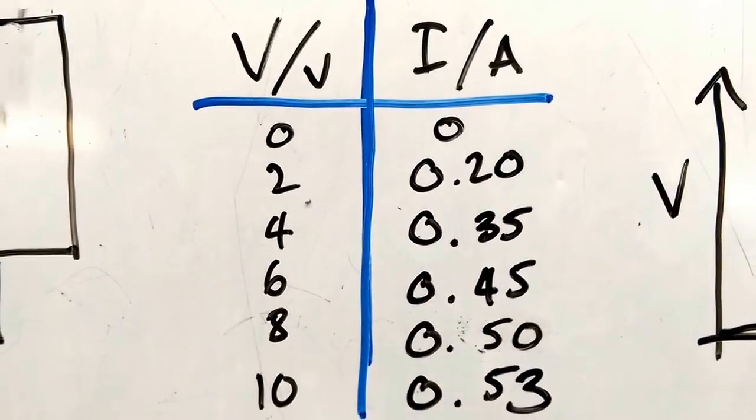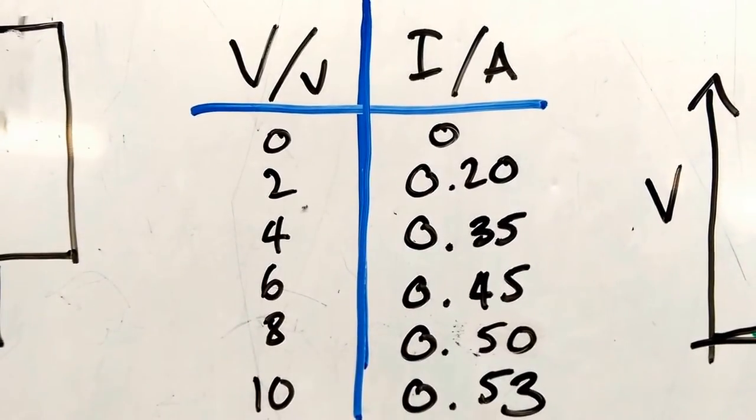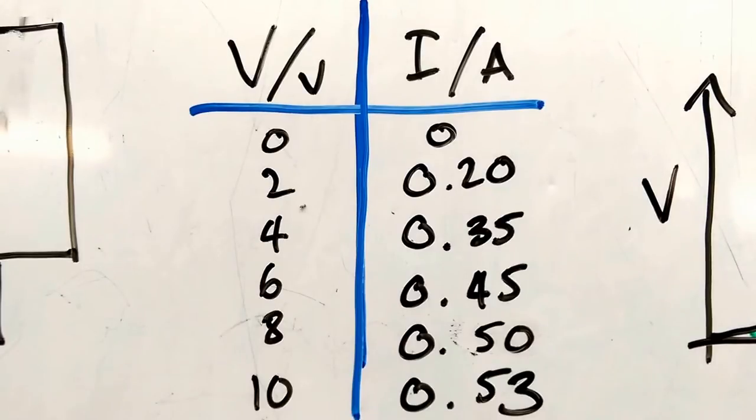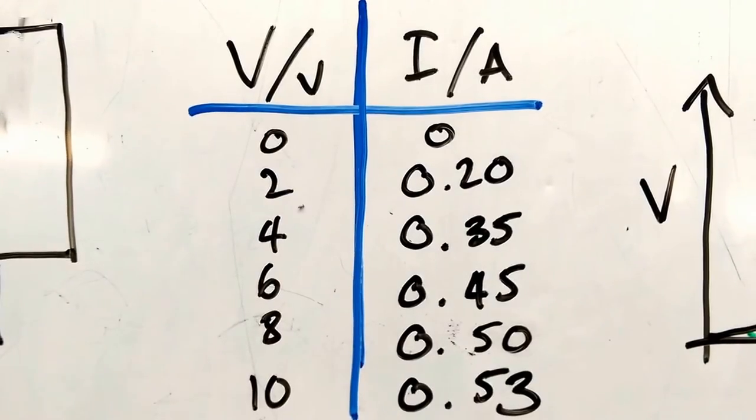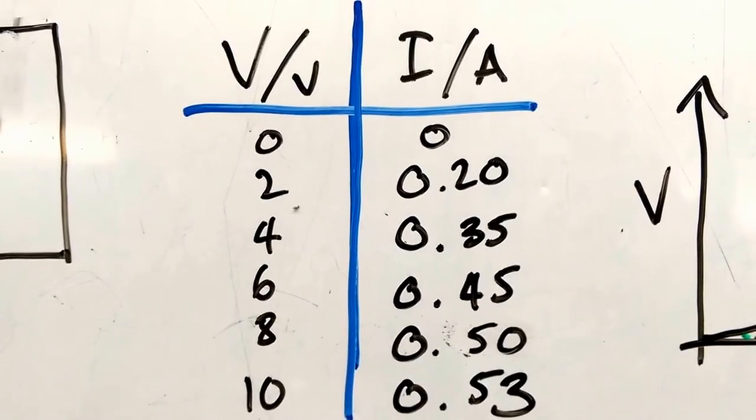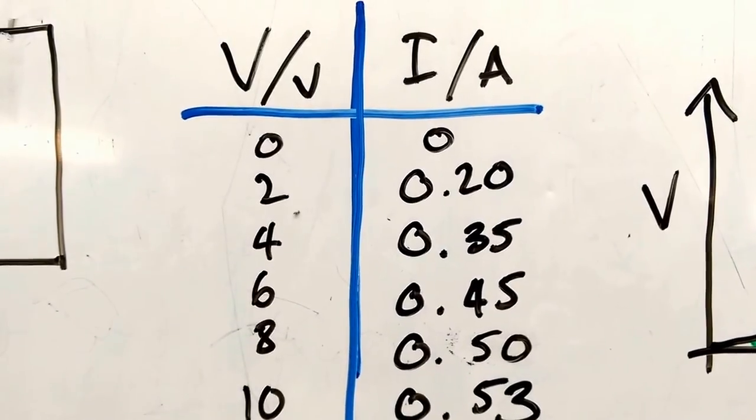Same table. We're going to vary V, and we're going to measure I. And you can see that actually now we don't get double V, double I, double voltage, double current.